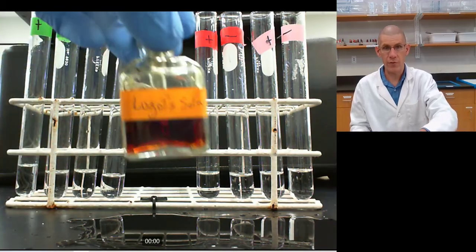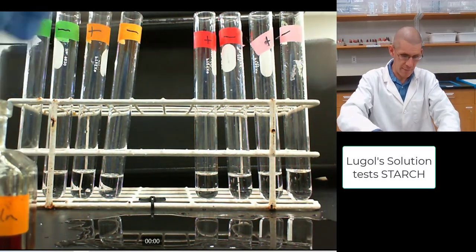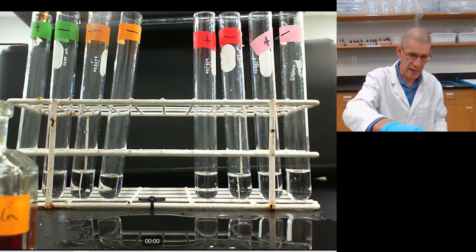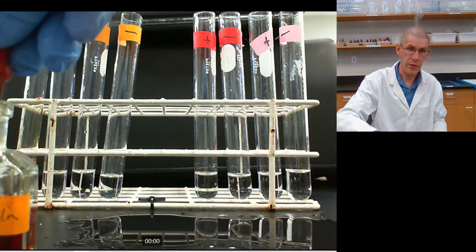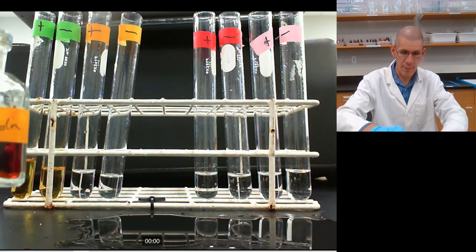So let's start this off with Lugol solution here. This is an indicator for starches, and I'm going to add a few drops of that to my green one. It'd be good to record which one you're adding it to, so you can remember which one's which. A couple drops there.